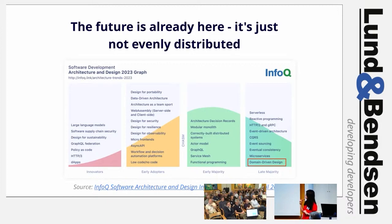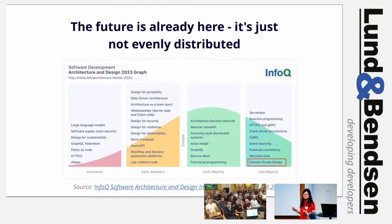In a way, the William Gibson quote — 'the future is already here, it's just not evenly distributed' — is quite catchy, except that DDD is a thing from the past, not the future.